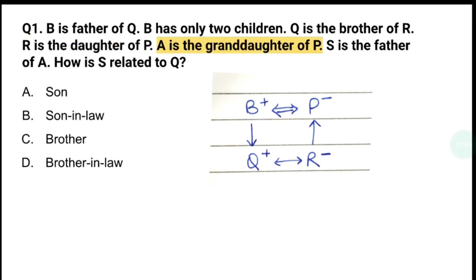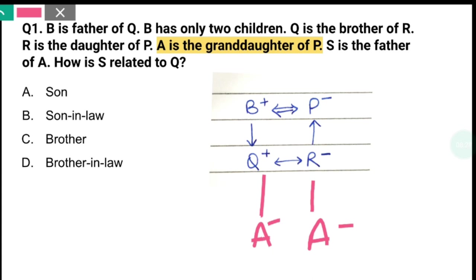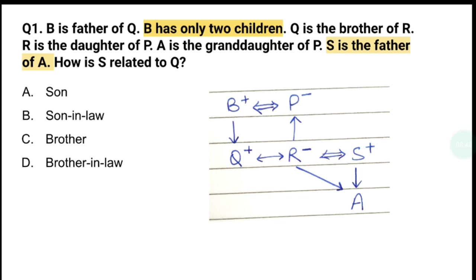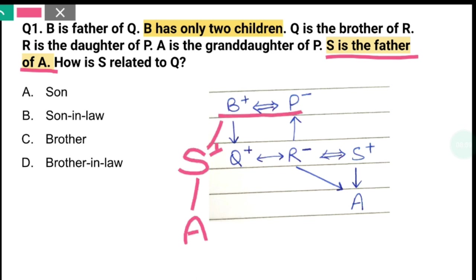अब देखते हैं A is the granddaughter of P। इसका मतलब है A जो है वो P की granddaughter है, यानि वो इनसे भी एक generation नीचे है। वो R की daughter होगी या वो Q की daughter होगी — अभी हमें sure नहीं है। इसको देखने के लिए हम अगला sentence देखते हैं जहां पर लिखा है S is the father of A। ऐसा भी हो सकता था कि B और P का ही एक और child हो जाता S, बट ऐसा नहीं है क्योंकि यहां पर लिखा है B has only two children।